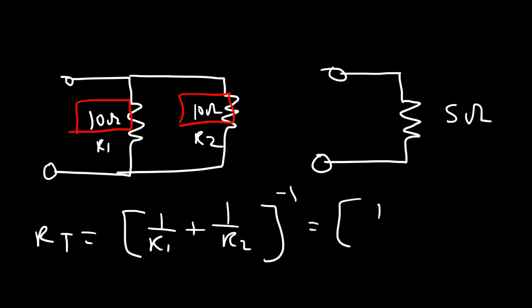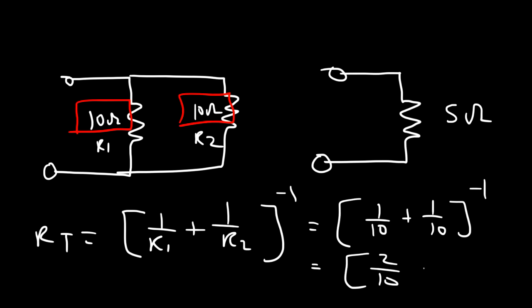So this is going to be 1 over 10 plus 1 over 10, raised to the negative 1. Now 1 plus 1 is 2, so this becomes 2 over 10. And when you raise a fraction to the negative 1 power, you basically flip the fraction. So this becomes half of 10, or 10 divided by 2, which is 5.